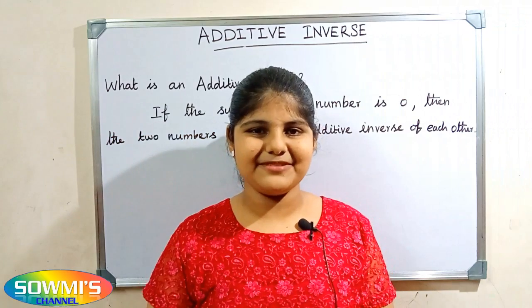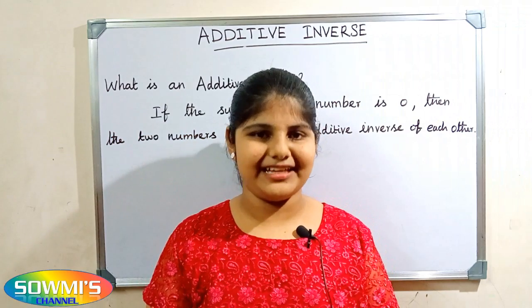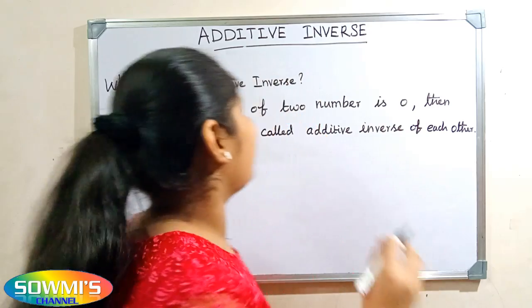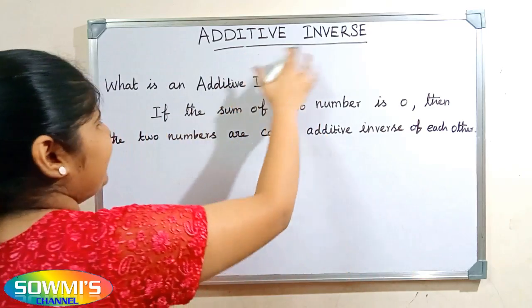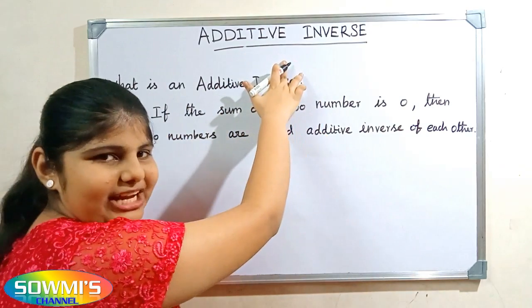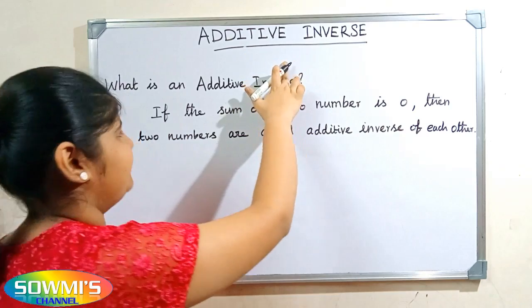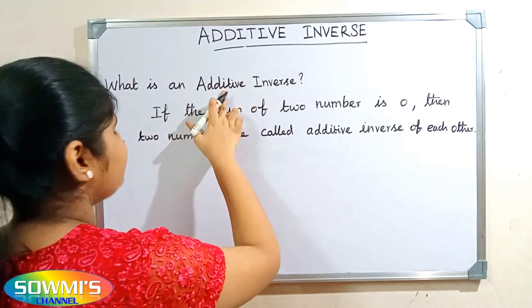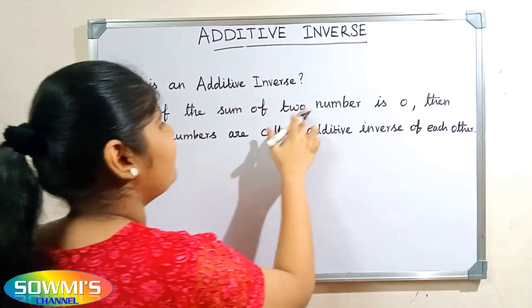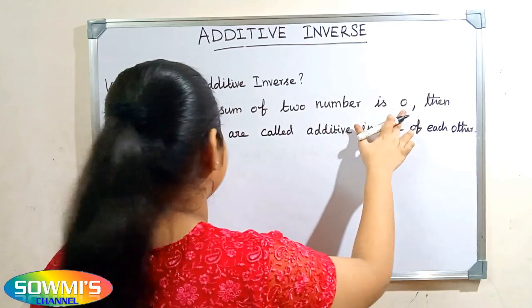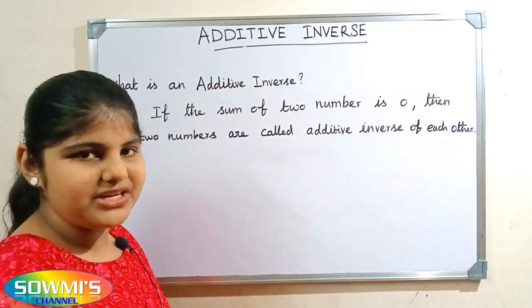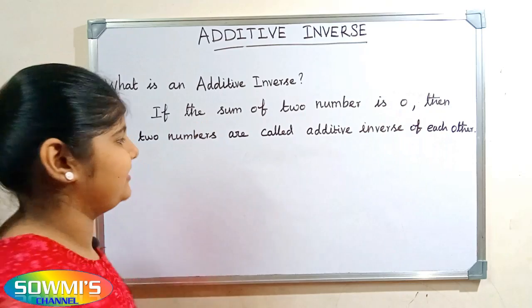Hi friends, welcome to SOMS channel. In this video, I am going to teach how to find additive inverse. Additive inverse is one of the properties of addition. This property says that if the sum of two numbers is zero, then the two numbers are called additive inverse of each other.